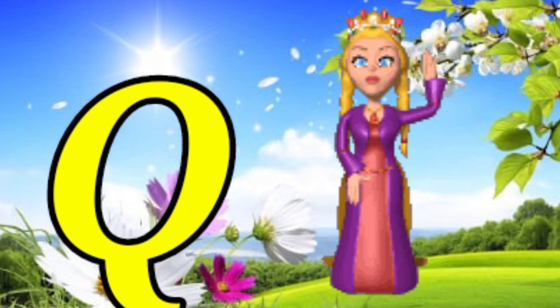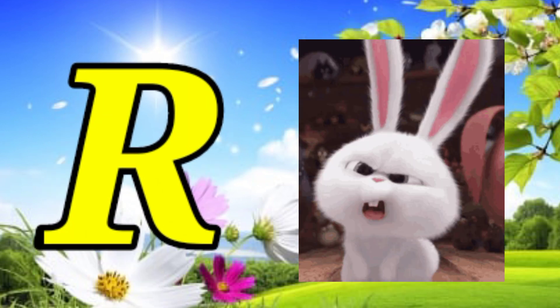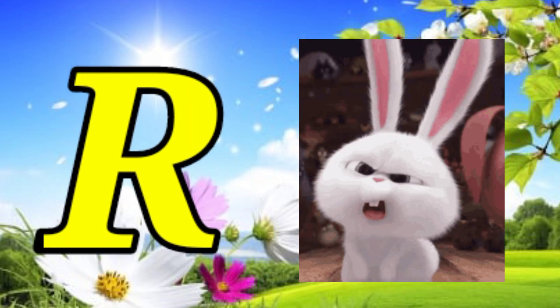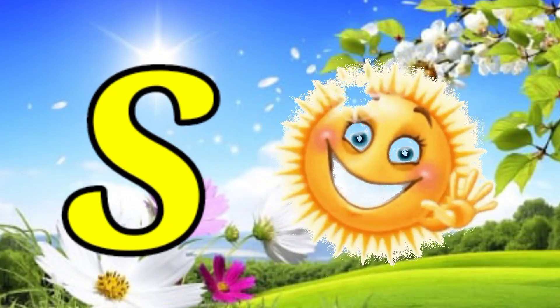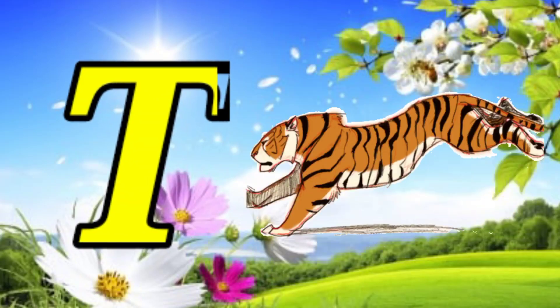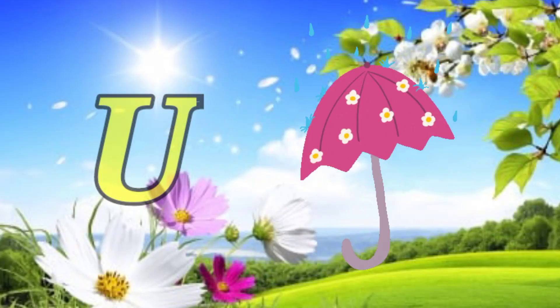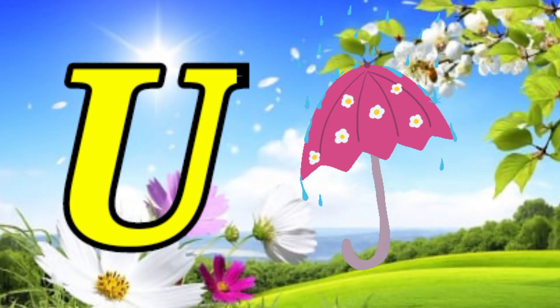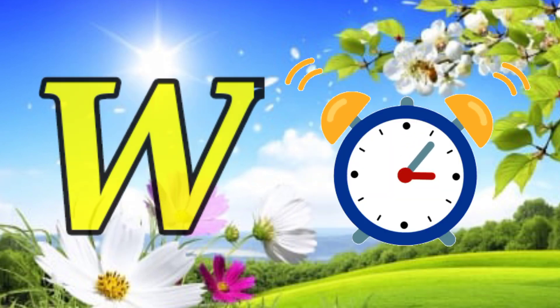Q for queen, R for rabbit, S for sun, T for tiger, U for umbrella, V for violin.